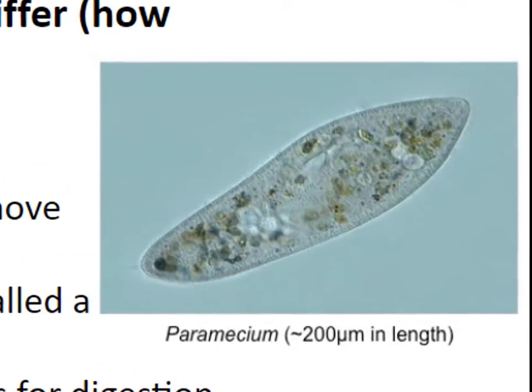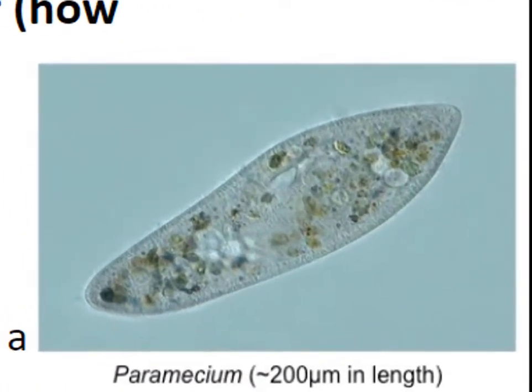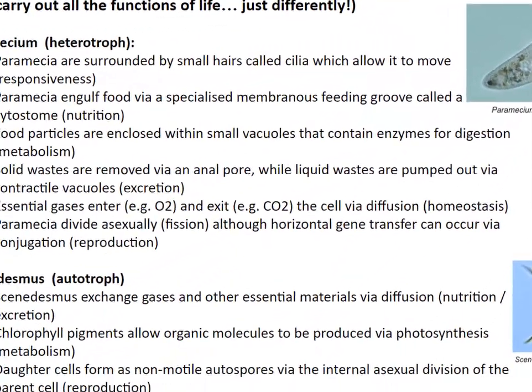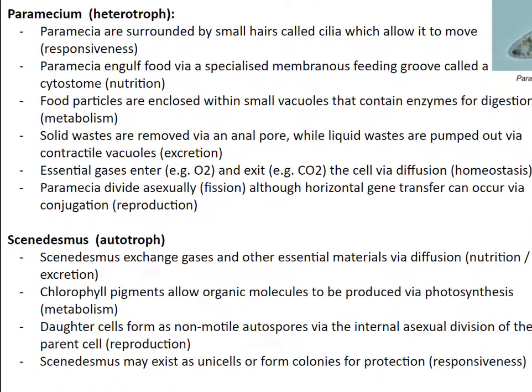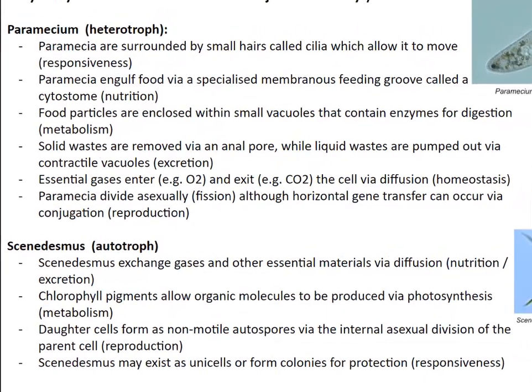Look at the cute paramecium — it's unicellular, going around in aquatic environments. Paramecia are surrounded by hairs called cilia, which allow it to move — this is the responsiveness. Paramecia engulf food via a specialized membranous feeding groove called a cytostome. Food particles are enclosed within small vacuoles containing enzymes for digestion — that's the metabolism. Solid wastes are removed via an anal pore, while liquid wastes are pumped out via contractile vacuoles. Essential gases enter and exit via diffusion. Paramecia divide asexually, although horizontal gene transfer can occur via conjugation. For cenodesmus, they exchange gases and materials via diffusion, have chlorophyll pigments allowing photosynthesis, and may exist as unicells or form colonies for protection.